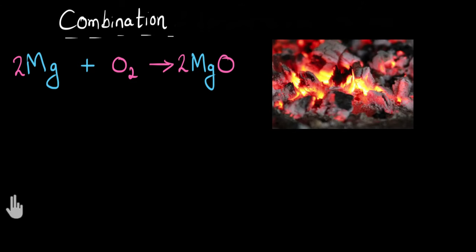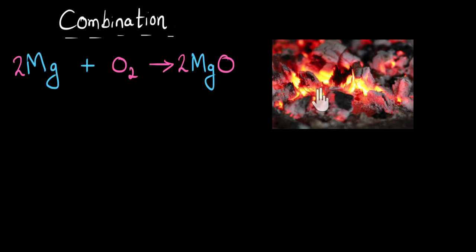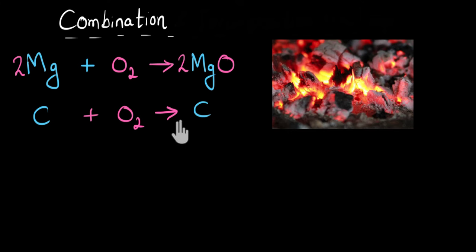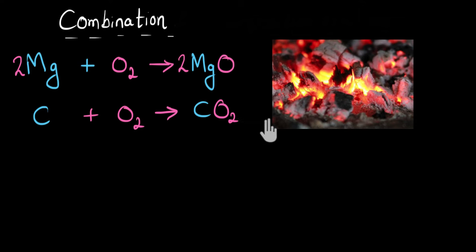Another example is the burning of coal, which is also a combination reaction. The carbon present in coal burns with air, combining with oxygen to give carbon dioxide, releasing a lot of light and heat energy. Writing the chemical equation: carbon reacts with oxygen to give carbon dioxide — C plus O2 gives CO2. These both combine to give carbon dioxide, and a lot of heat is generated in this reaction too.